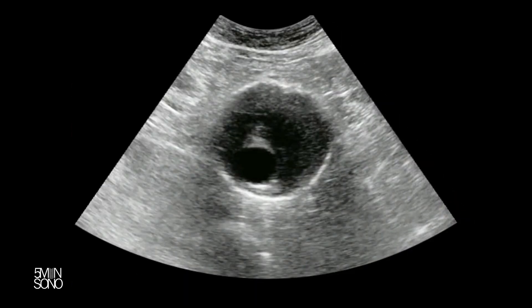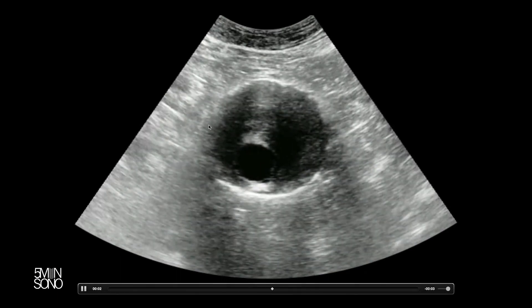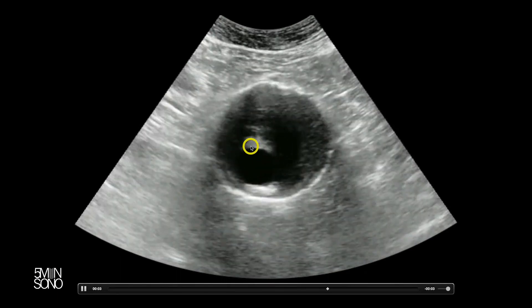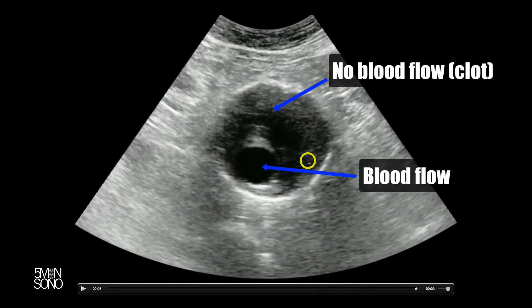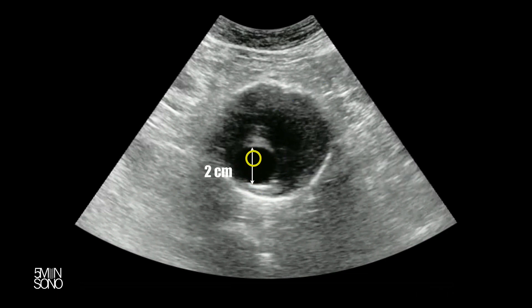There's one aorta here and it splits into two iliacs right there. So this is an aortic aneurysm — a pretty big one. Now, this area right here has flow in it, but all of this is clot. You can't just measure the flow channel; if you did, you'd say it's two centimeters — not a big deal, less than three centimeters. But in fact, you have to measure outer wall to outer wall. You can see that this is actually a very big seven centimeter aneurysm.